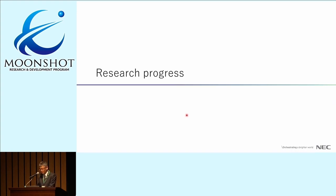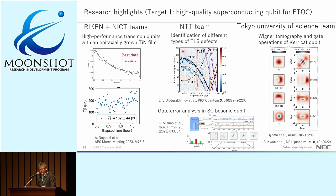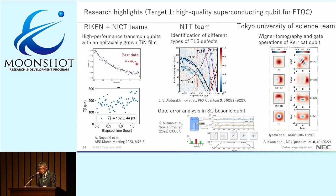Now I'd like to introduce our progress over these two and a half years. For the first target, Nojima's team in collaboration with NICT Yoshida's team successfully fabricated high-performance transmon qubits with an epitaxially grown titanium nitride film. They reproducibly achieved more than 100 microsecond T1 and T2, and in the best case T1 is more than 400 microseconds, which I believe is one of the longest reported for transmon qubits. They are now using this high-quality qubit for bosonic qubit experiments.